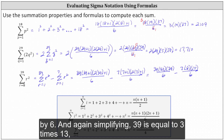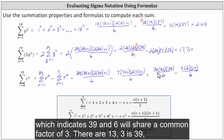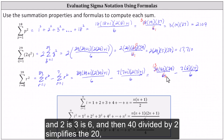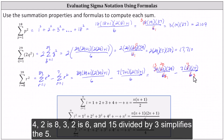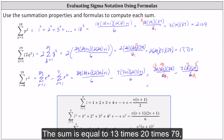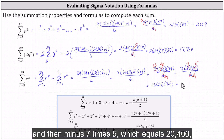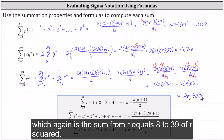Simplifying further: 39 and 6 share a common factor of 3, giving 13; and 40 divided by 2 simplifies to 20. For the second quotient, 8 and 6 share a common factor of 2, giving 4; and 15 divided by 3 simplifies to 5. The sum equals 13 times 20 times 79, minus 7 times 4 times 5, which equals 20,400. This is the sum from r equals 8 to 39 of r squared.